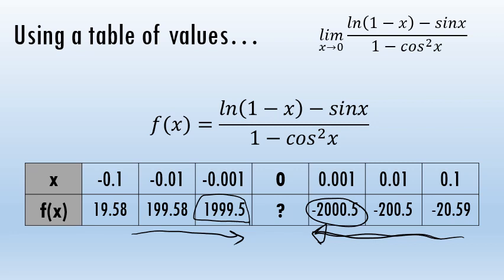This is what was shown in the graph as well. If the value of f of x is not approaching the same number from above and below 0, that implies the limit does not exist.